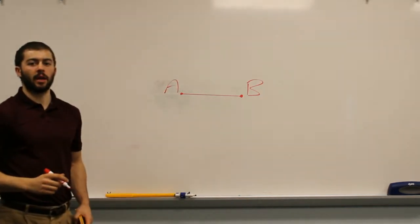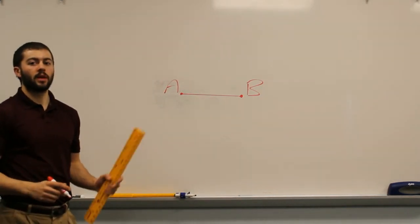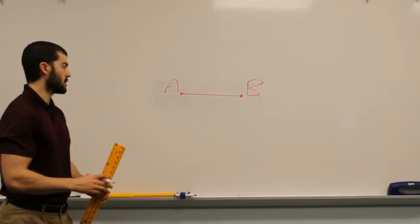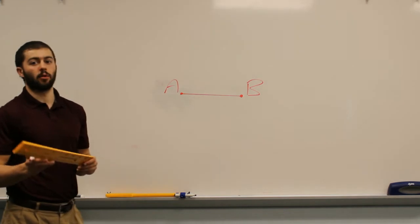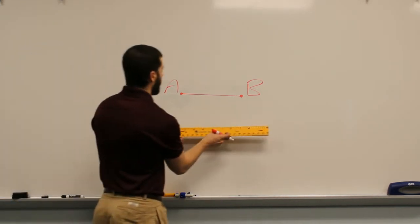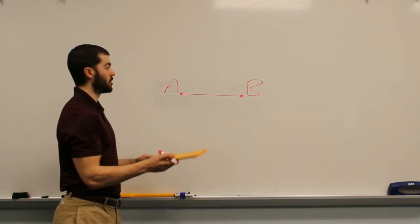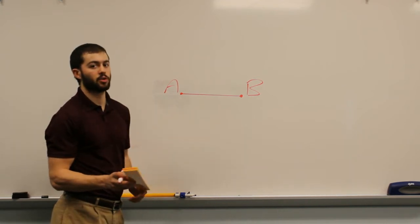Alright, so if we have line segment AB here and we want to copy it, the first thing we need is a new ray that we can use as our baseline for making the new line segment. Alright, so this new ray must be longer than the original length of the line segment that we're trying to copy.